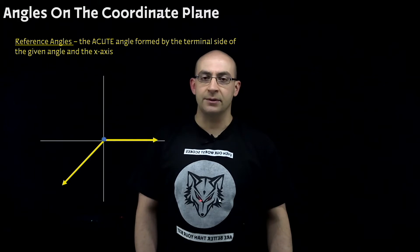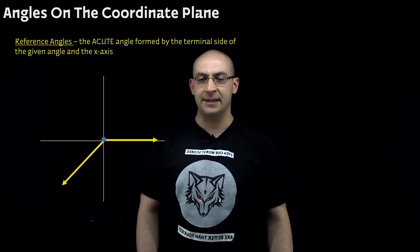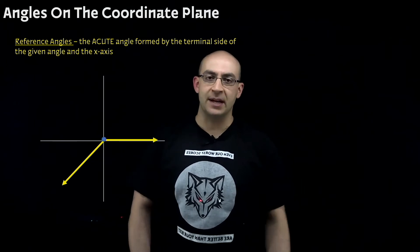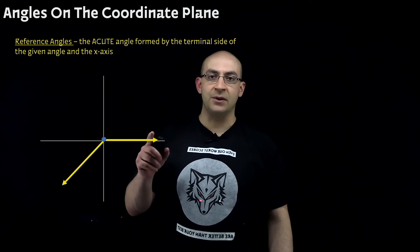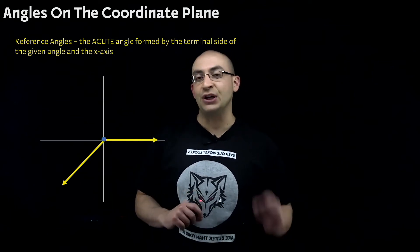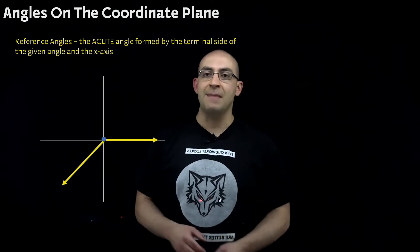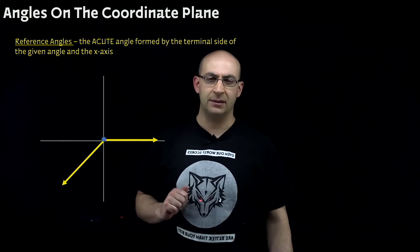Kind of like coterminal angles, reference angles almost have the same idea. The only difference between a reference angle and a coterminal angle is I'm not trying to meet the angle from its initial point all the way around to its terminal point. All I'm trying to do is find the acute angle that matches from the axis to that terminal point.